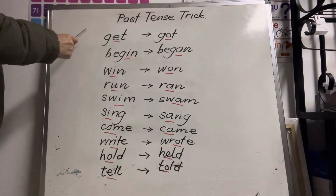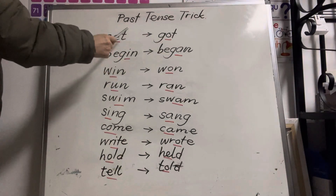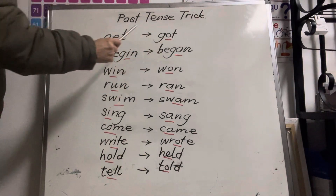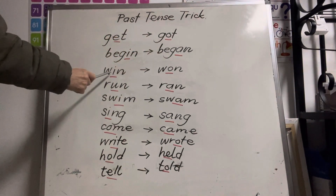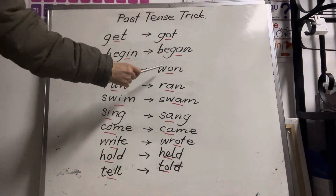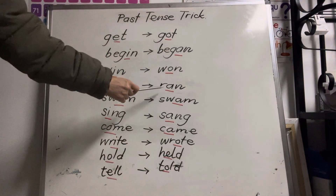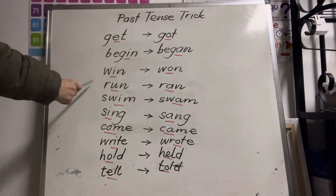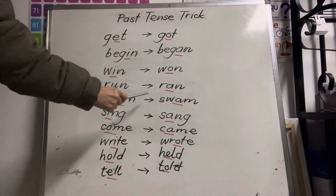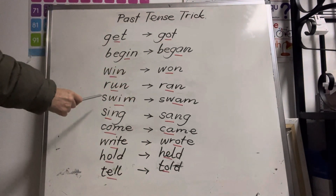Past tense of get is got. Past tense of begin is began. Past tense of win is won. Past tense of run is ran. Past tense of swim is swam.